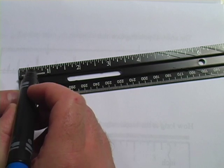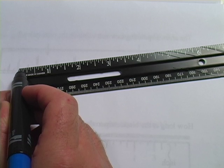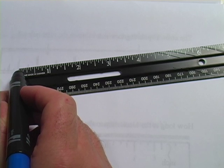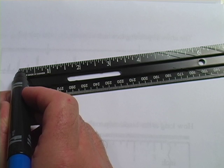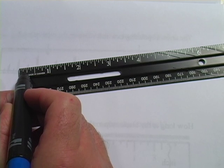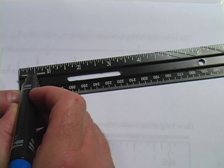And then if you go the next longest line, that is going to be your eighth inch. And this ruler actually goes down to sixteenth inches. But let's look at the eighth inch. So there's one eighth. Two eighths is the same as one quarter. Three eighths. Four eighths is the same as one half.